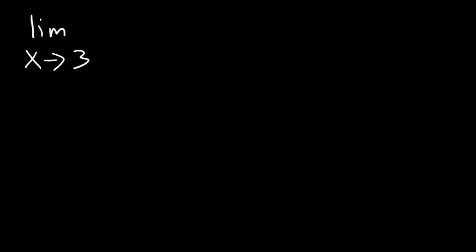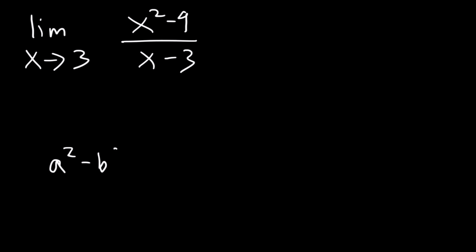Here's another problem: what is the limit as x approaches 3 of x squared minus 9 divided by x minus 3? We need to factor x squared minus 9 using the difference of perfect squares formula. The formula is: a squared minus b squared equals a plus b times a minus b.